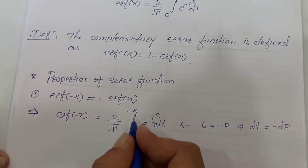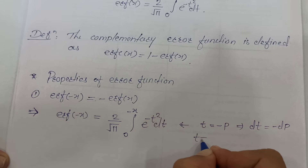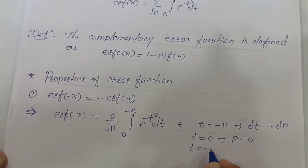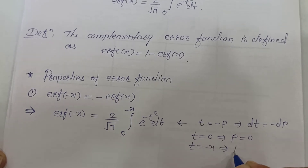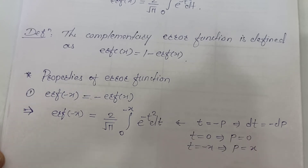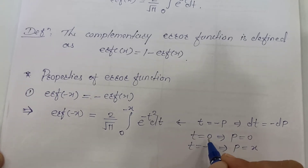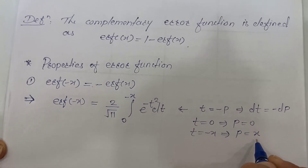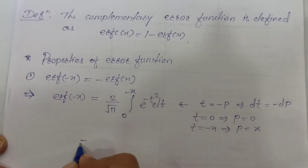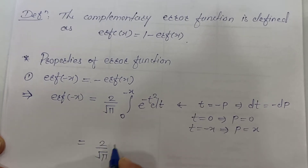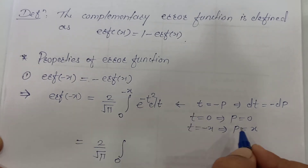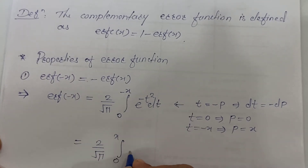For the limits: when t is 0, p is also 0, and when t is minus x, then p becomes x, since t equals minus p. Applying the substitution, we get 2 upon root pi, integration from 0 to x. Since t equals minus p, t squared equals p squared, so minus t squared becomes minus p squared, and dt becomes minus dp.